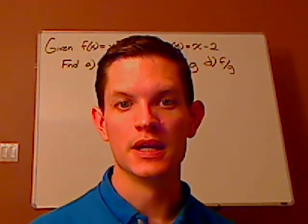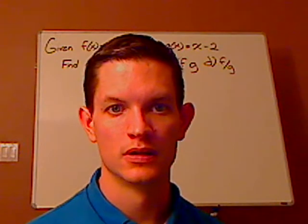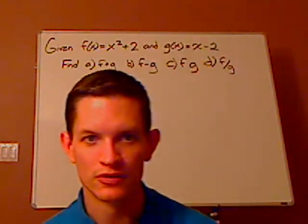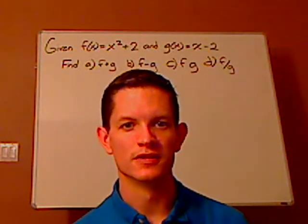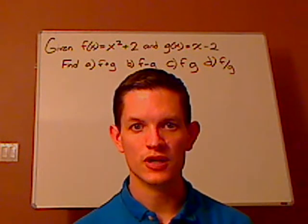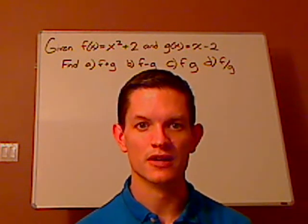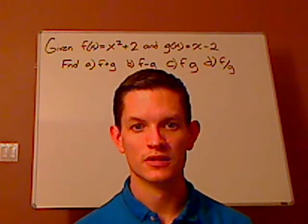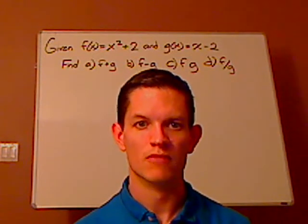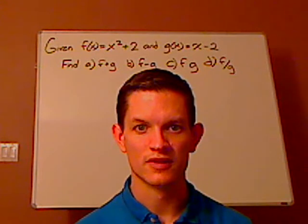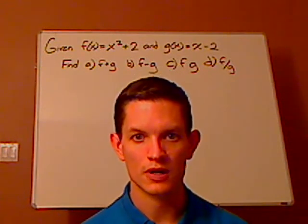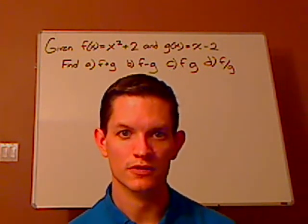Hi, I'm JD, and today we're going to be doing what's called combinations of different functions. On the board I have two functions: f of x equals x squared plus 2, and g of x equals x minus 2. You're asked to find: a) f plus g, b) f minus g, c) f times g, and d) f divided by g. Pause the video and see if you can try these on your own.